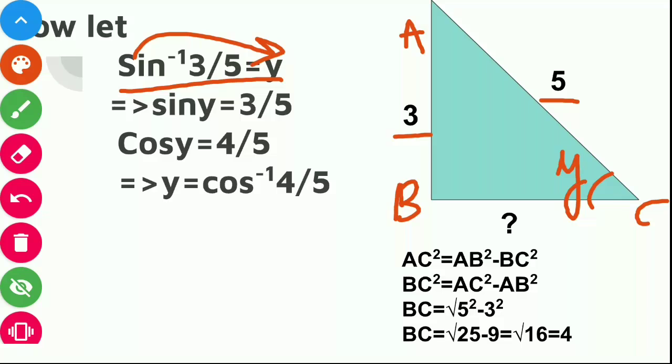Again, we will put the values of AB and AC. We will get BC as 4. Base as 4. So cos we know is base upon hypotenuse.